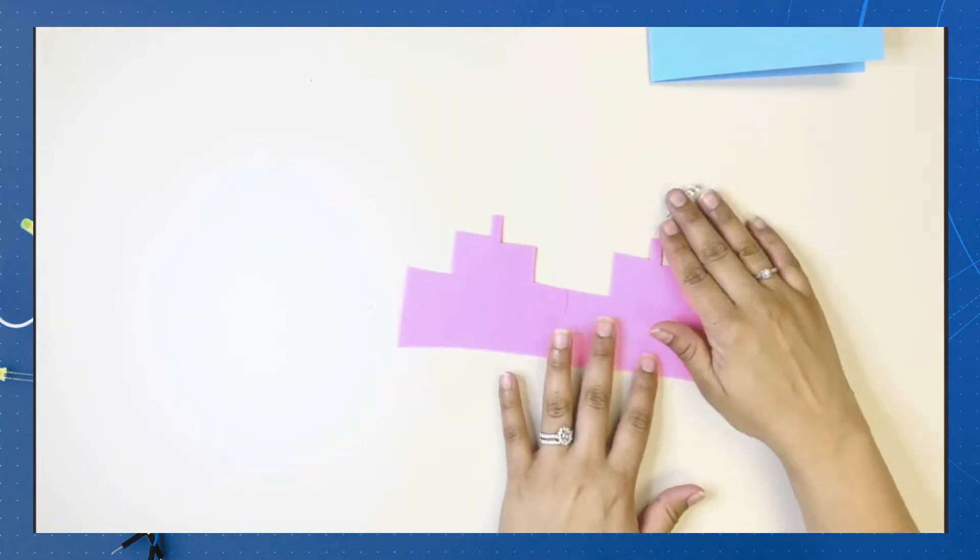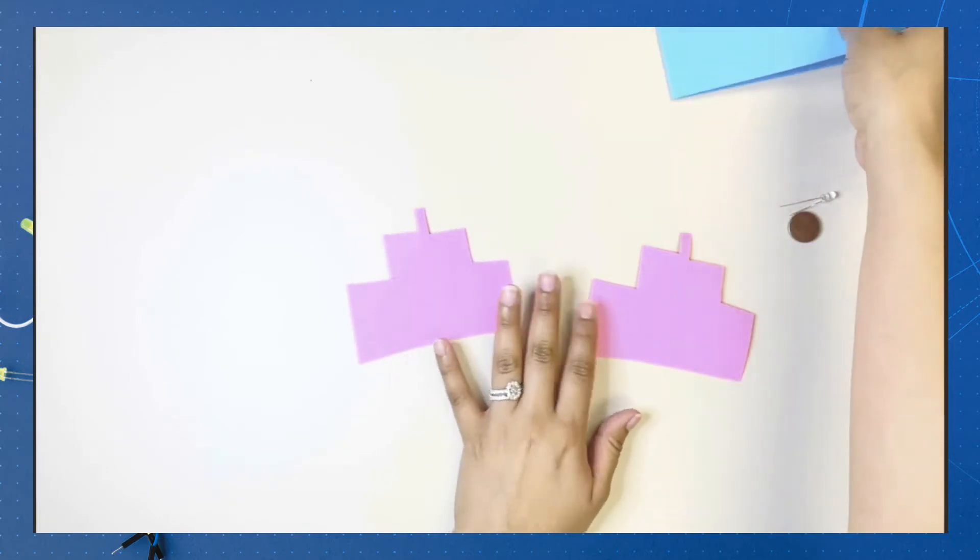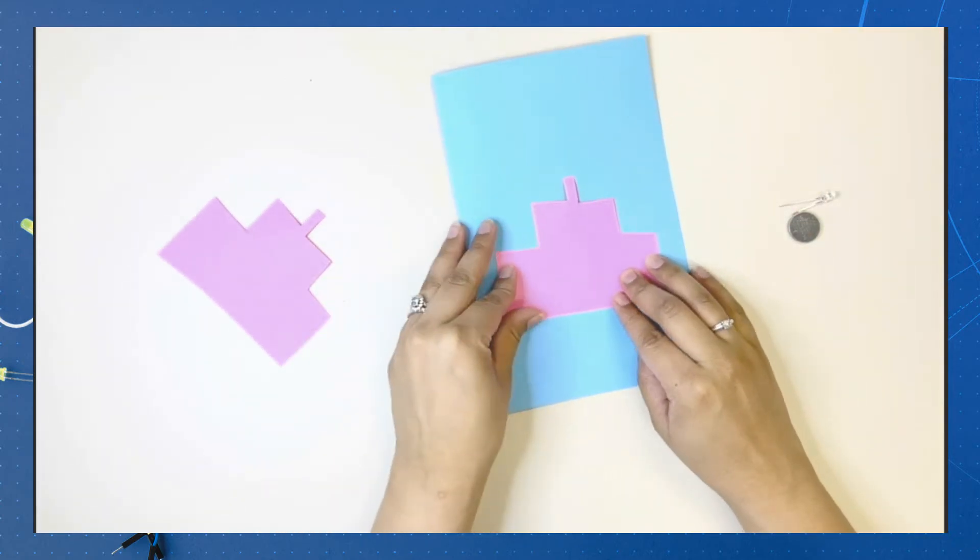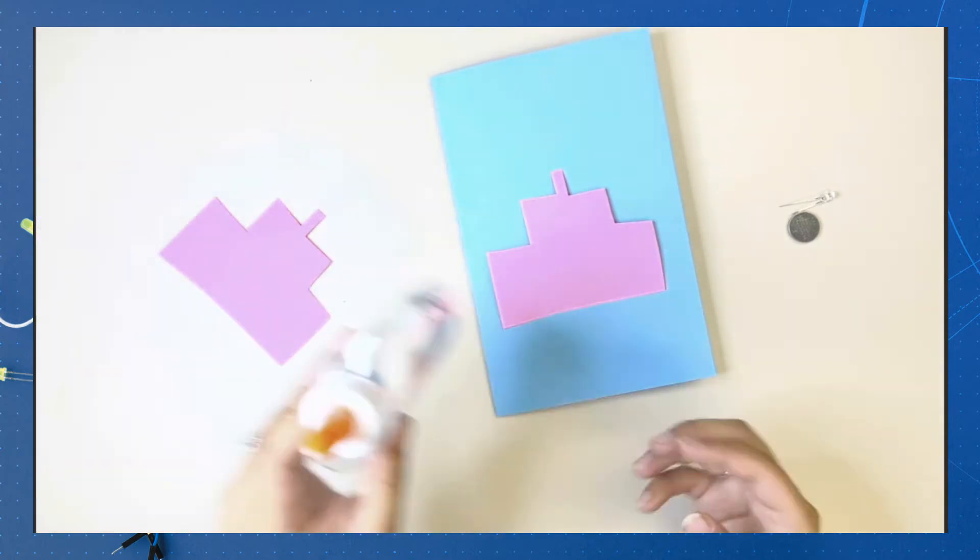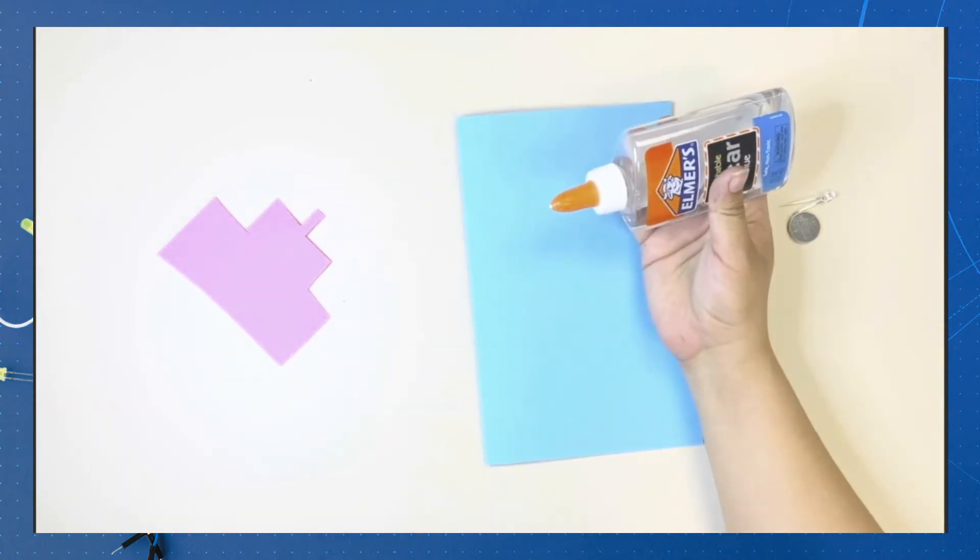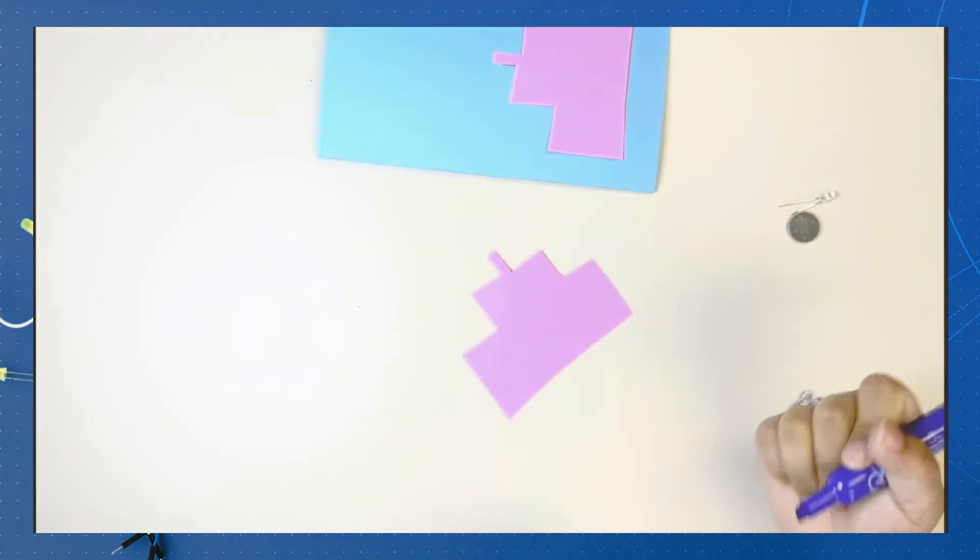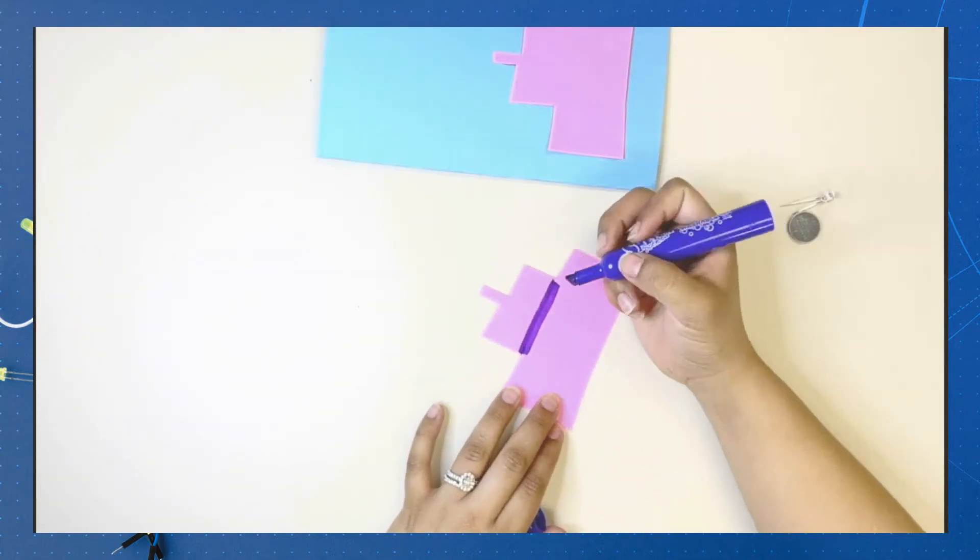We will now assemble our card. Take the base of your card and glue the bottom face of your cake onto it. Place it closer to the bottom to ensure you have enough space to write a message on the top of your card. While the glue dries, decorate the top face of your cake.